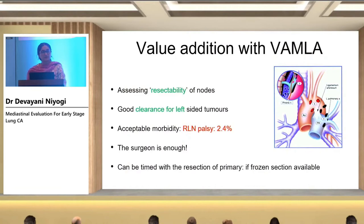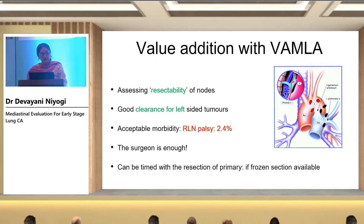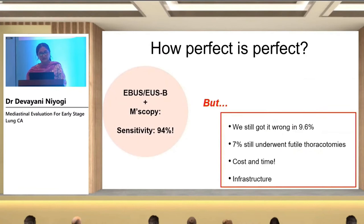A mediastinoscopy or VAMLA — video-assisted mediastinoscopic lymphadenectomy — is not completely obsolete. It helps the surgeon assess resectability of the nodes. It gives very good clearance for left-sided tumors because the aortic arch comes in the way when clearing left-sided nodes via a VATS or thoracotomy approach. The morbidity is acceptable — a palsy rate of 2.4%. Most attractively, the surgeon alone is sufficient — no dependence on other procedures — and it can be timed at the same sitting as resection of the primary if frozen section is available.